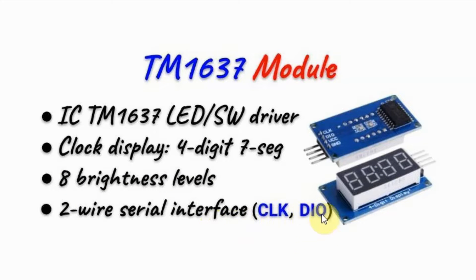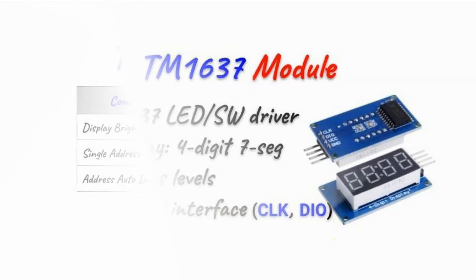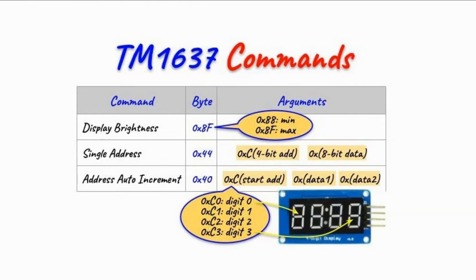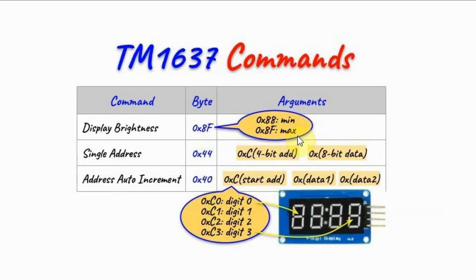TM1637 is programmed by serially sending command bytes. The first byte we send is the display brightness command, and the value 0x8F will turn on the display and put it into maximum brightness. We can have eight levels of brightness, so 0x88 is the minimum and 0x8F is the maximum.